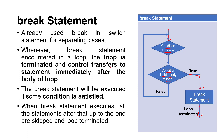When the loop is terminated, control transfers to the statement immediately after the body of the loop. If the break statement is encountered, that particular loop is terminated and control is given to the statement outside the body of the loop. The break statement will be executed if some condition is satisfied — it means if we are going to use break statement, we have to use it with some condition. When break statement executes, all statements after it up to the end are skipped and the loop is terminated.